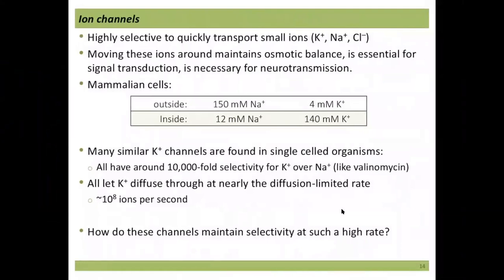Now let's talk about ion channels. Porins are slightly selective for cations, and valinomycin is very selective. Ion channels are highly selective and quickly transport small ions — potassium, sodium, chloride — to maintain osmotic balance and signal transduction, as well as neurotransmission.